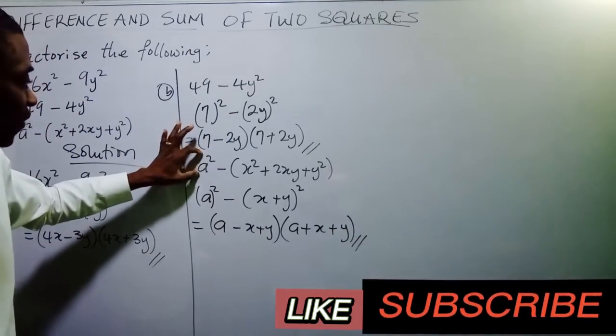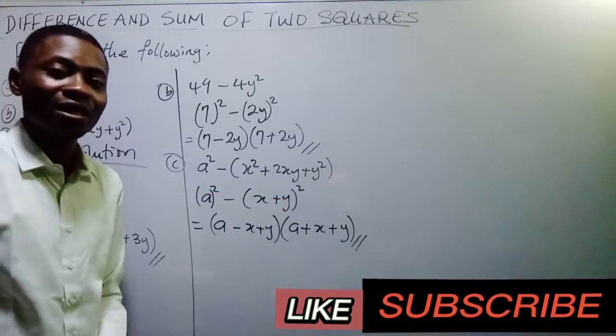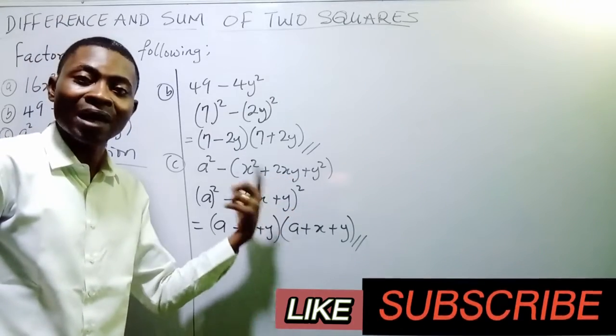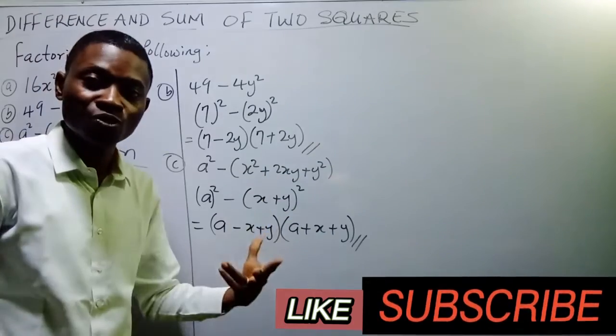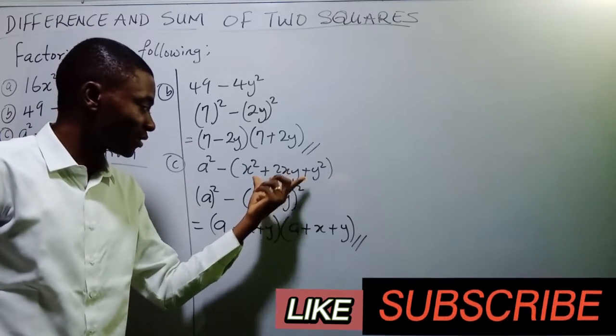We have successfully factorized a square minus open bracket x square plus 2xy plus y square. We're able to do this applying our knowledge from sum of two squares. If I should expand this, I'm going to get this back.